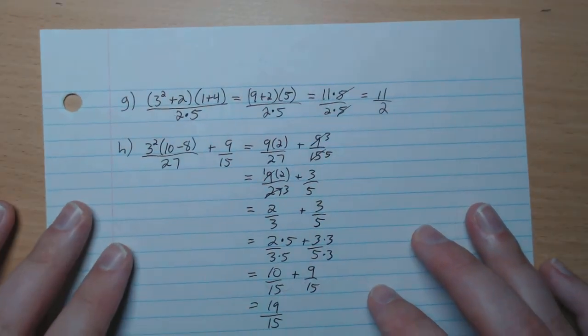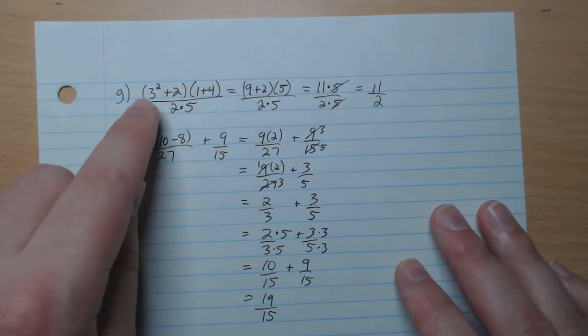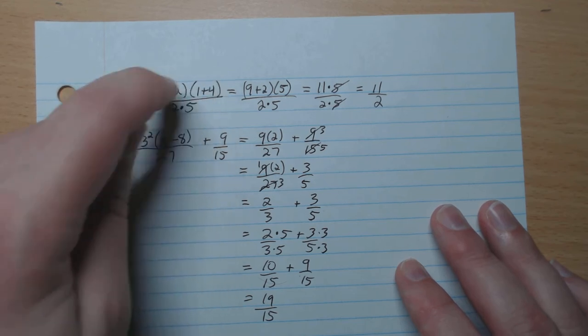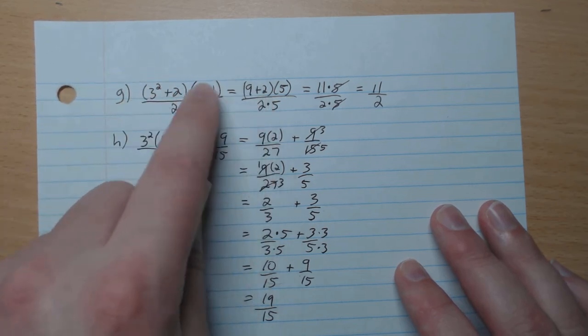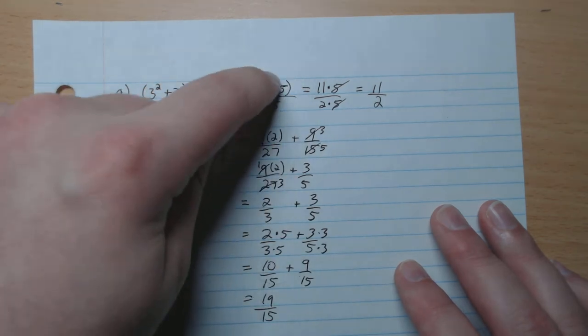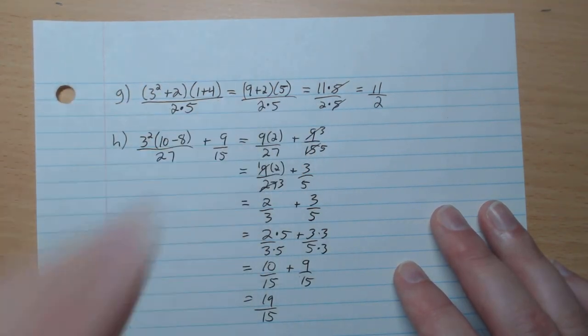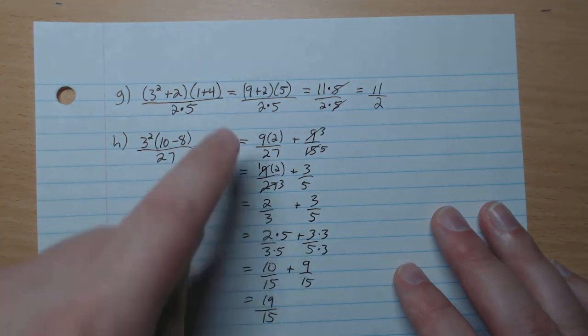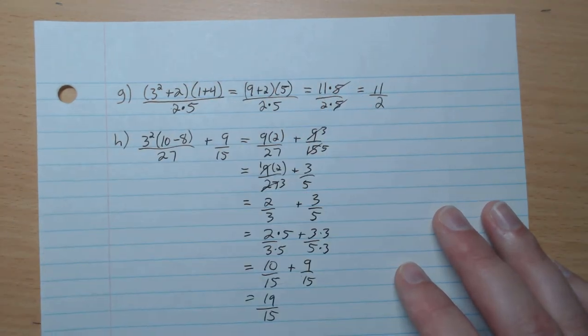G. What do we got? 3 squared comes first within the bracket. So that's 9 plus 2. 1 plus 4 is 5. 5 times all of this divided by 5 times all of that. The 5s can cancel. What's left is 11 over 2 as our final answer.